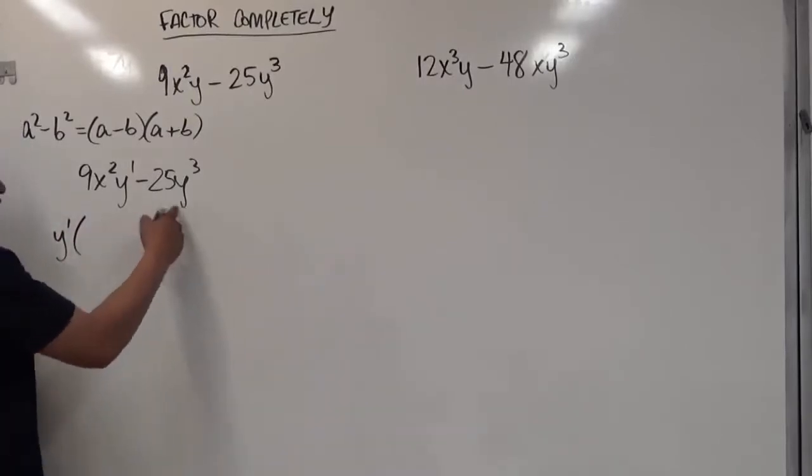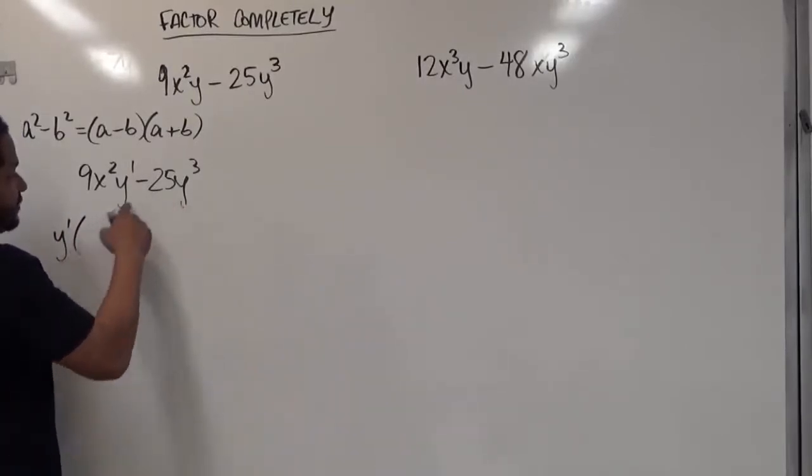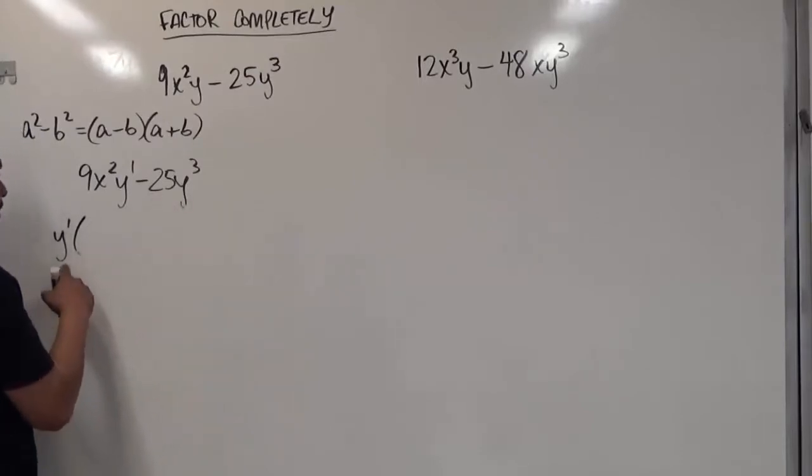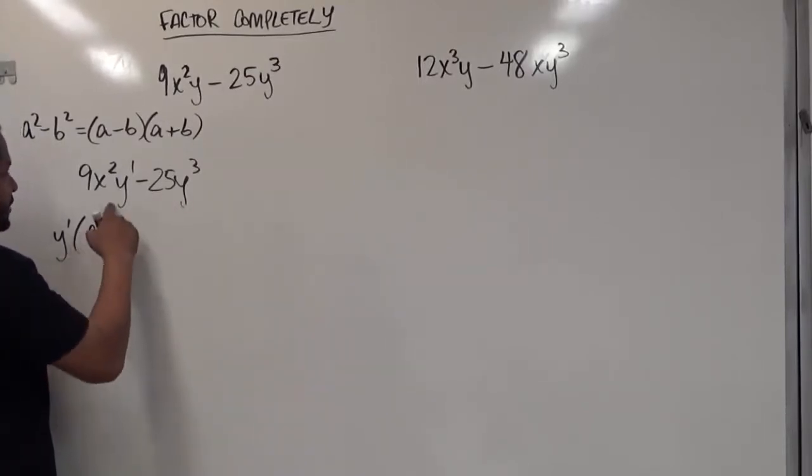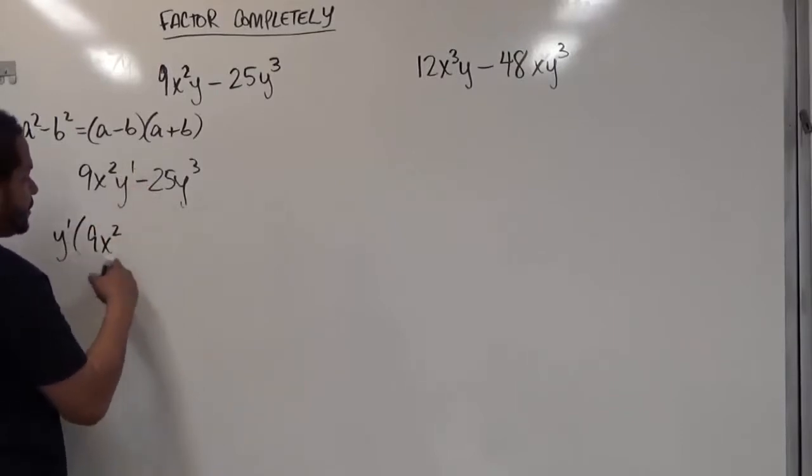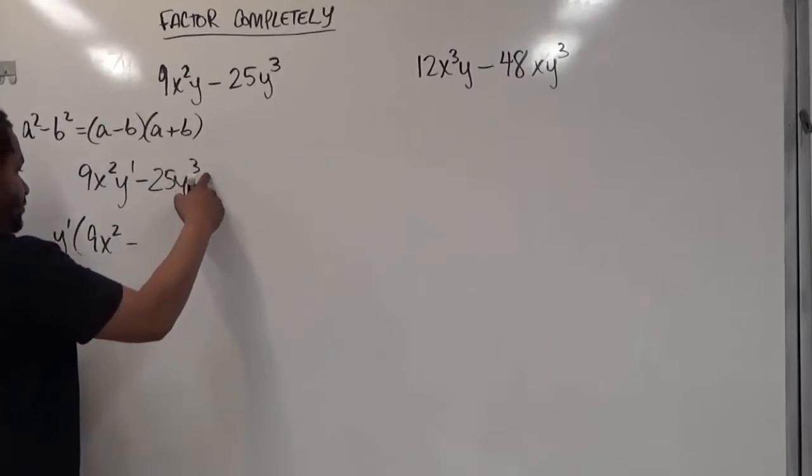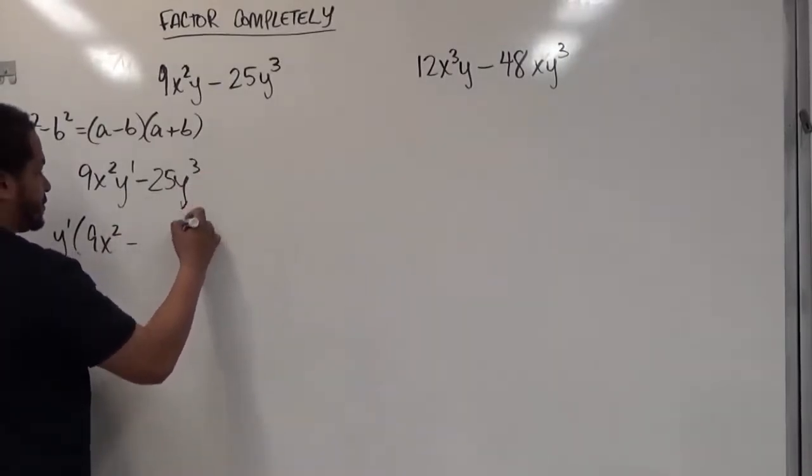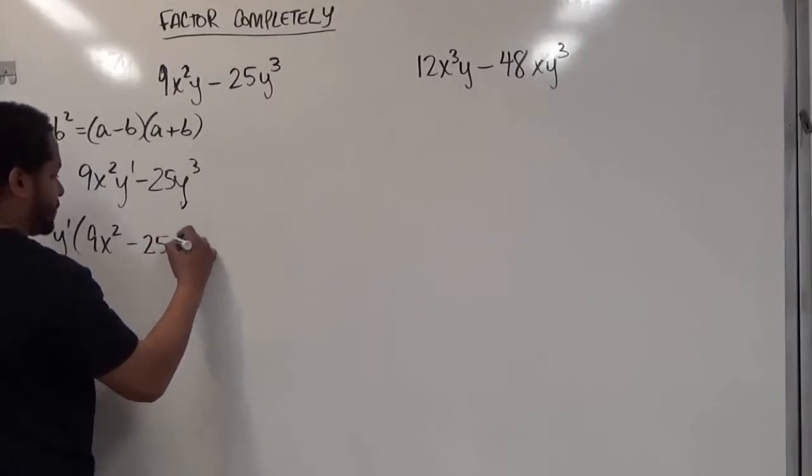After you factor it out, you're going to extract this y from each term by dividing each term with this y. So we have 9x squared. After we divide this by y, the y's go away. When we divide 25y cubed by y, we're going to have two y powers here left, so it's going to be y squared. So we're going to have 25y squared.